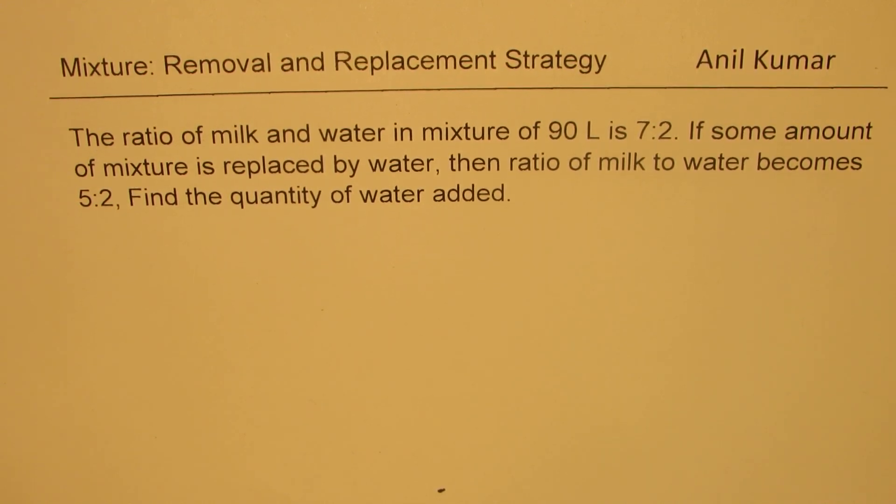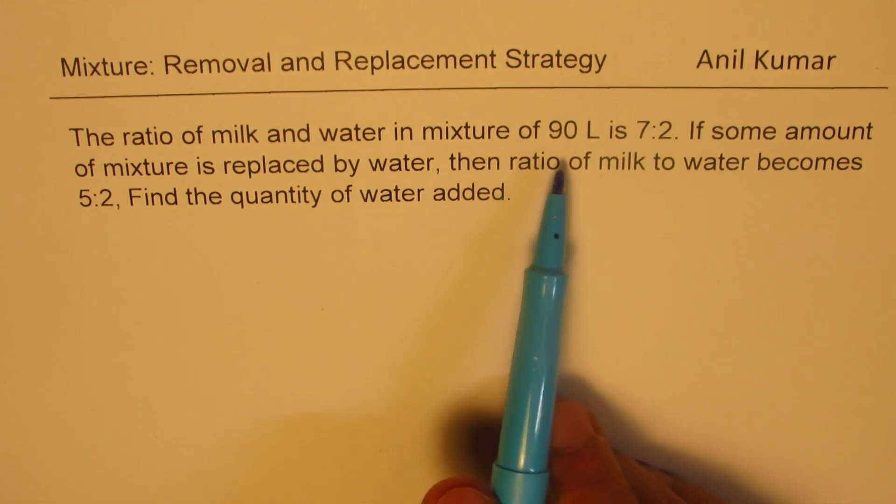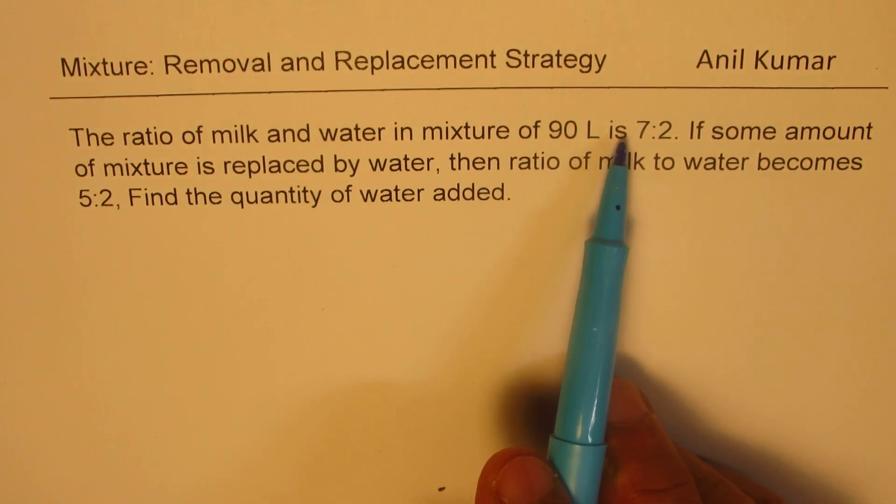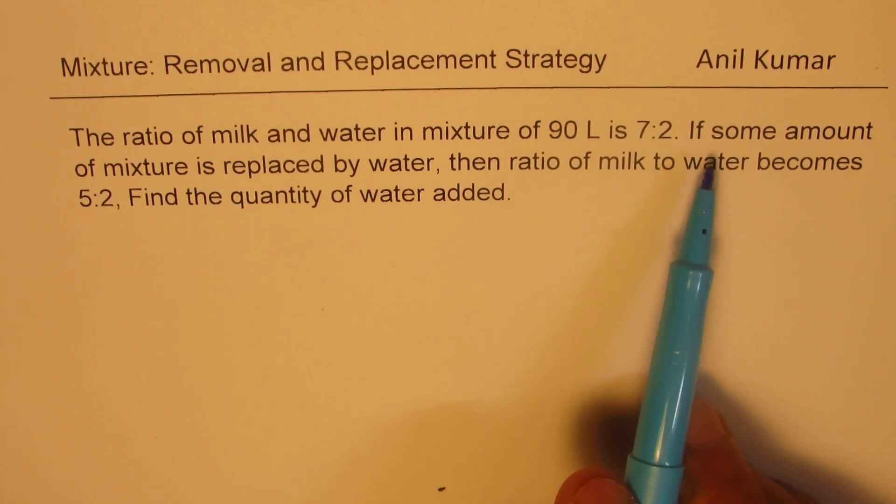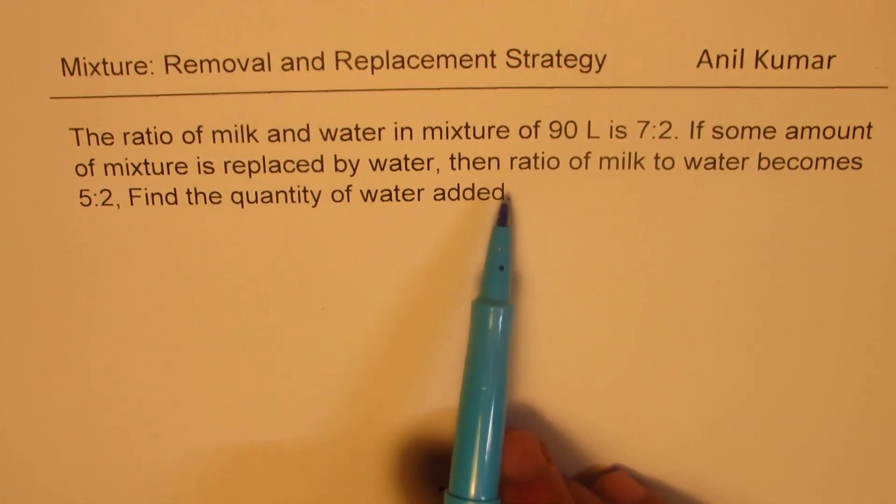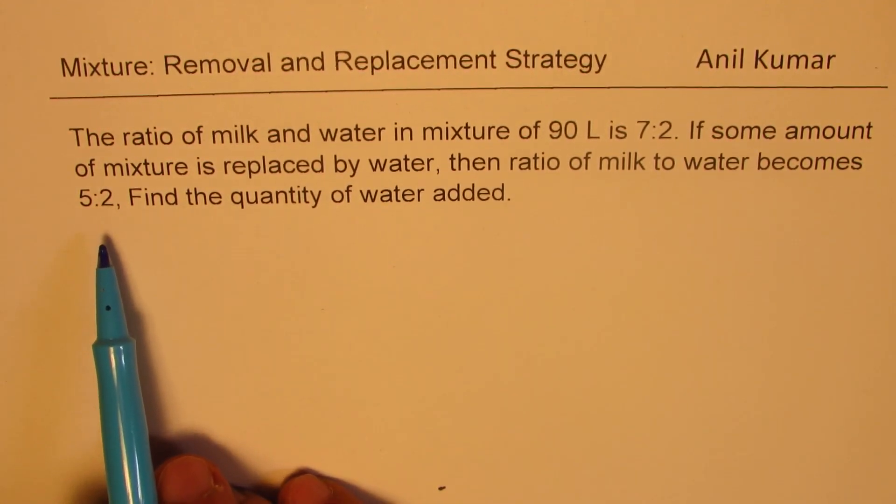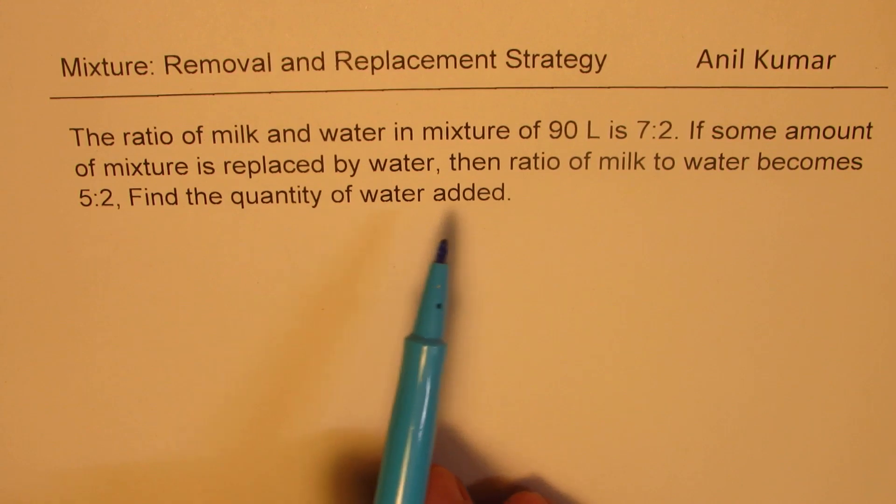The question here is: the ratio of milk and water in a mixture of 90 litres is 7:2. If some amount of mixture is replaced by water, then the ratio of milk to water becomes 5:2. Find the quantity of water added.